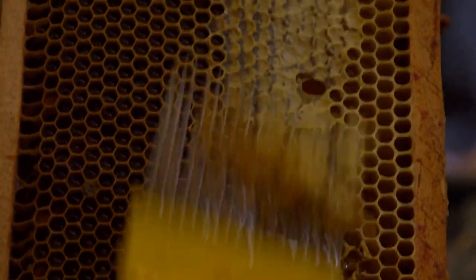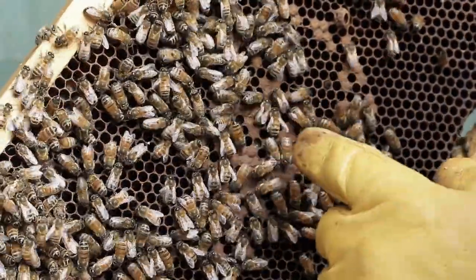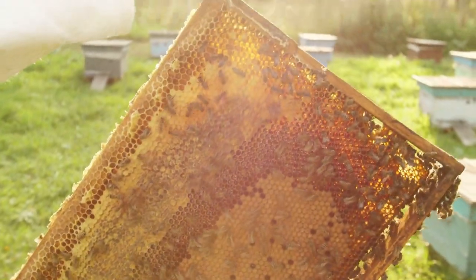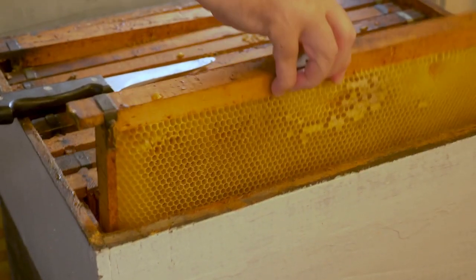The hive is organized into a series of hexagonal cells that are made from wax produced by the worker bees. The cells are used for different purposes. Some are used to store honey, others are used for raising the young, and still others are used as a bathroom for the bees.